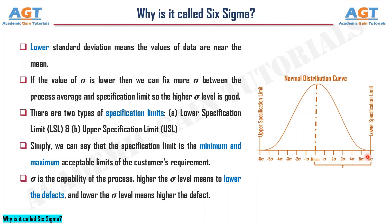There are two types of specification limits: lower specification limit (LSL) and upper specification limit (USL). Simply, the specification limit is the minimum and maximum acceptable limits of the customer's requirement. Sigma is the capability of the process. Higher sigma level means lower defects, and lower sigma level means higher defects.